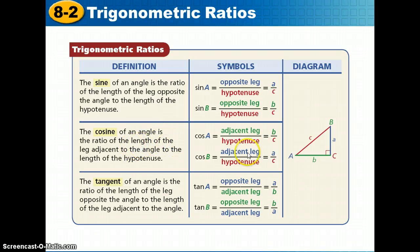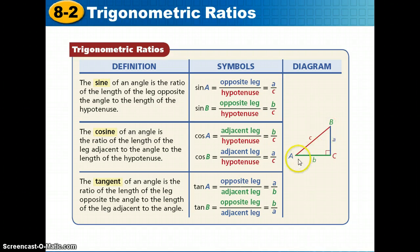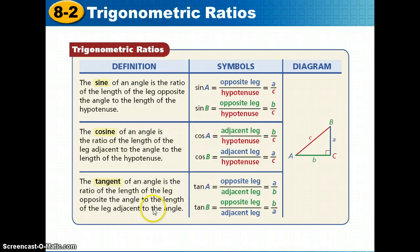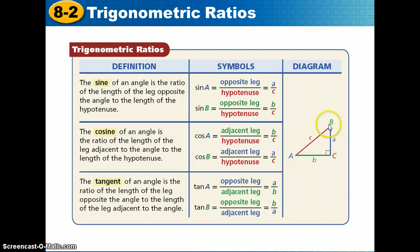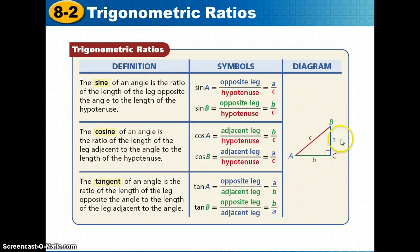Cosine is the ratio of the length of the leg adjacent to the angle to the length of the hypotenuse. For angle A, cosine A equals adjacent leg 'b' over hypotenuse 'c'. For angle B, it's adjacent leg 'a' over hypotenuse 'c'. Tangent is the ratio of the opposite leg to the adjacent leg — no hypotenuse involved. For angle A, tangent A is 'a' over 'b'; for angle B, opposite and adjacent switch.